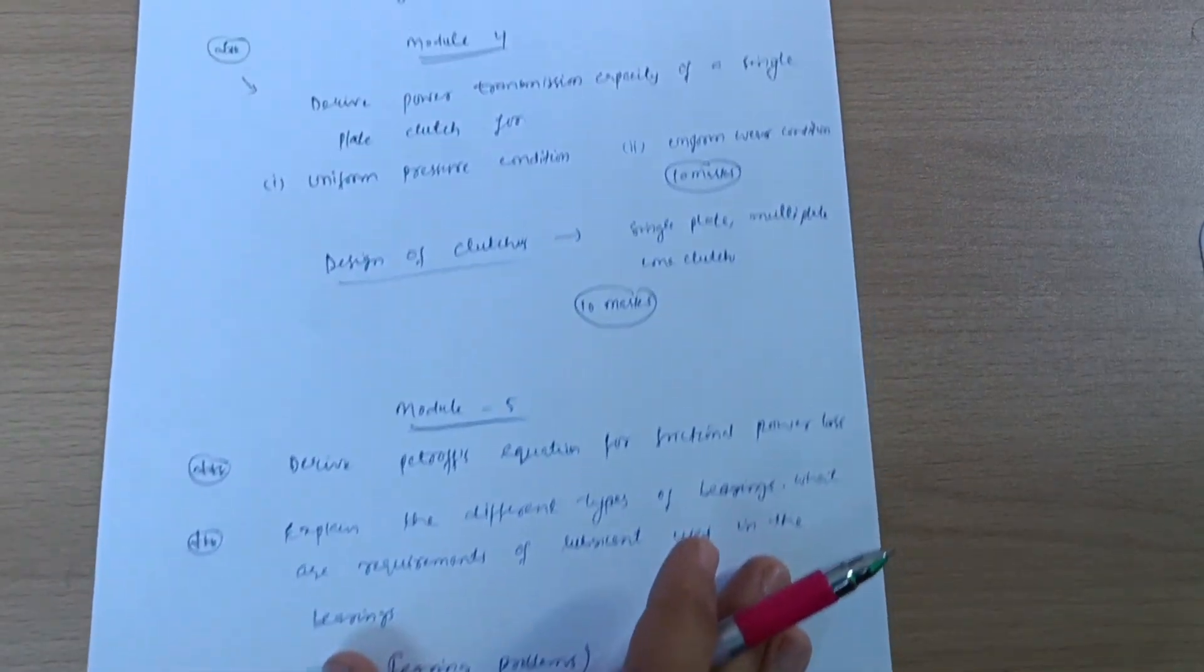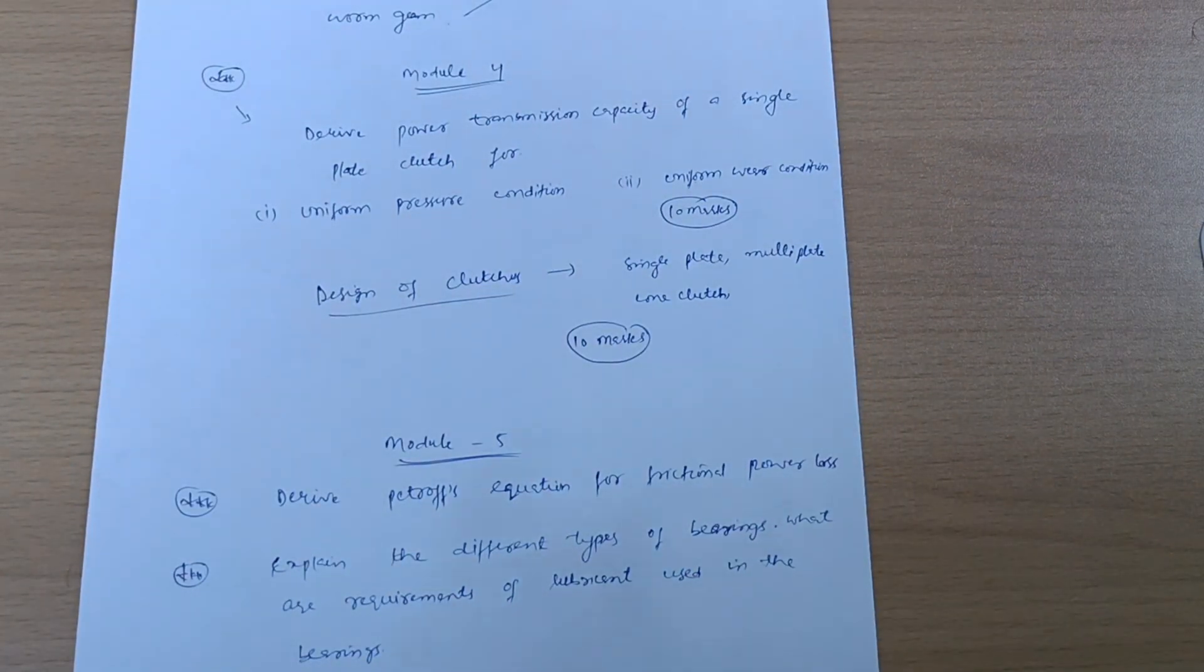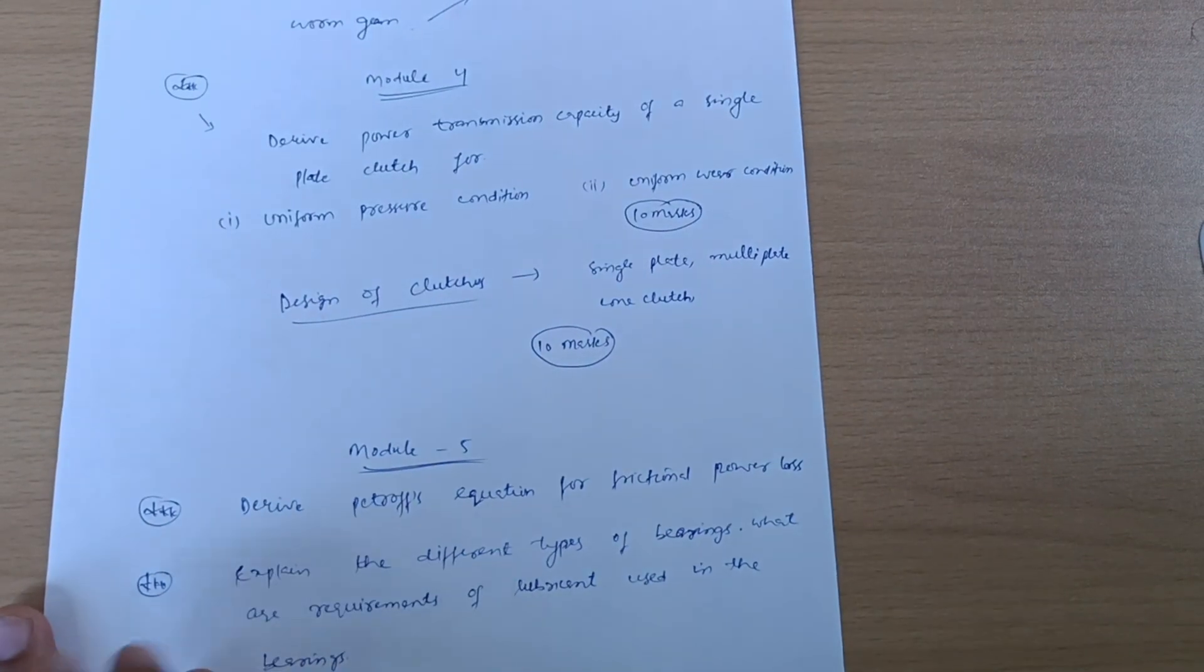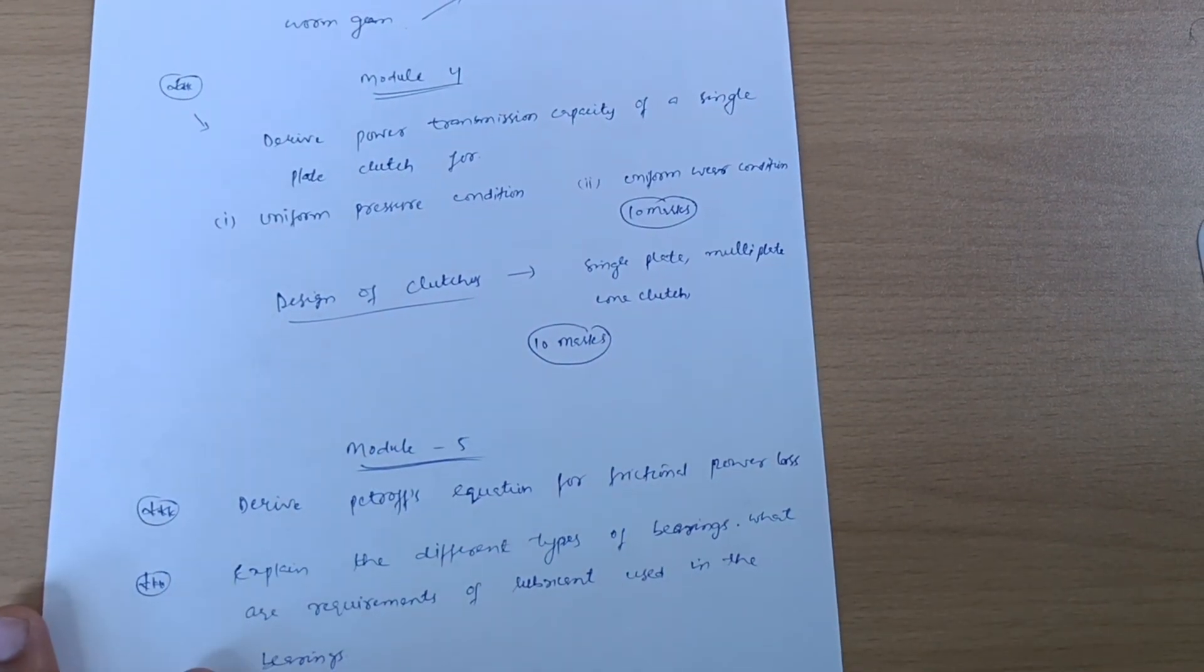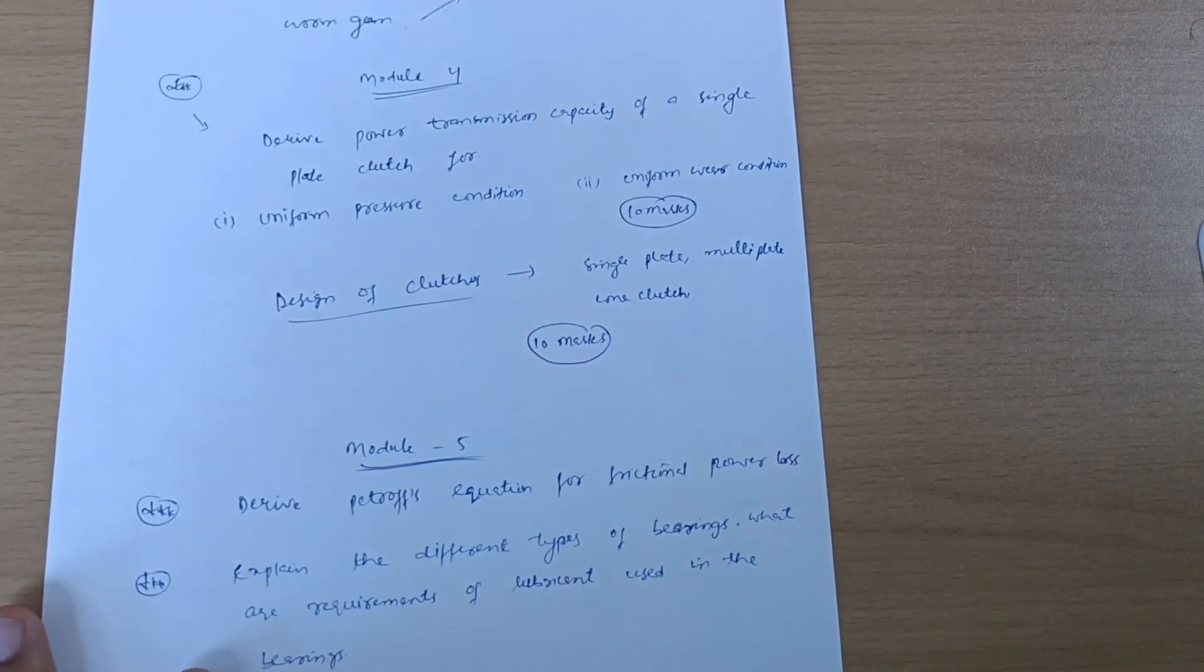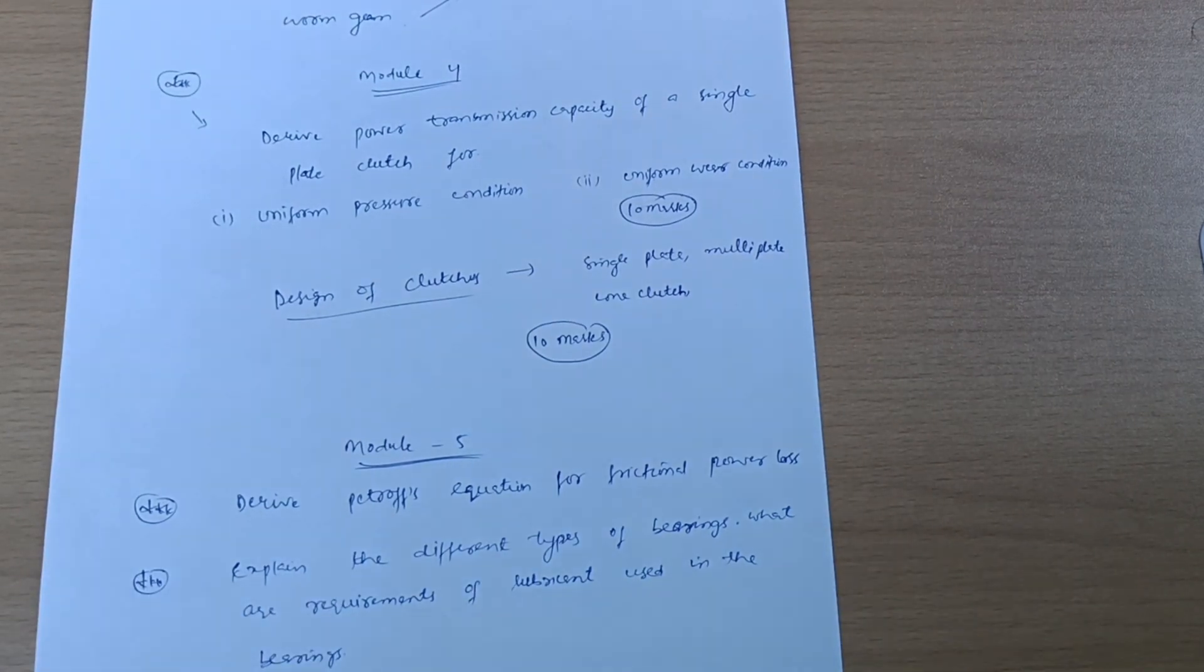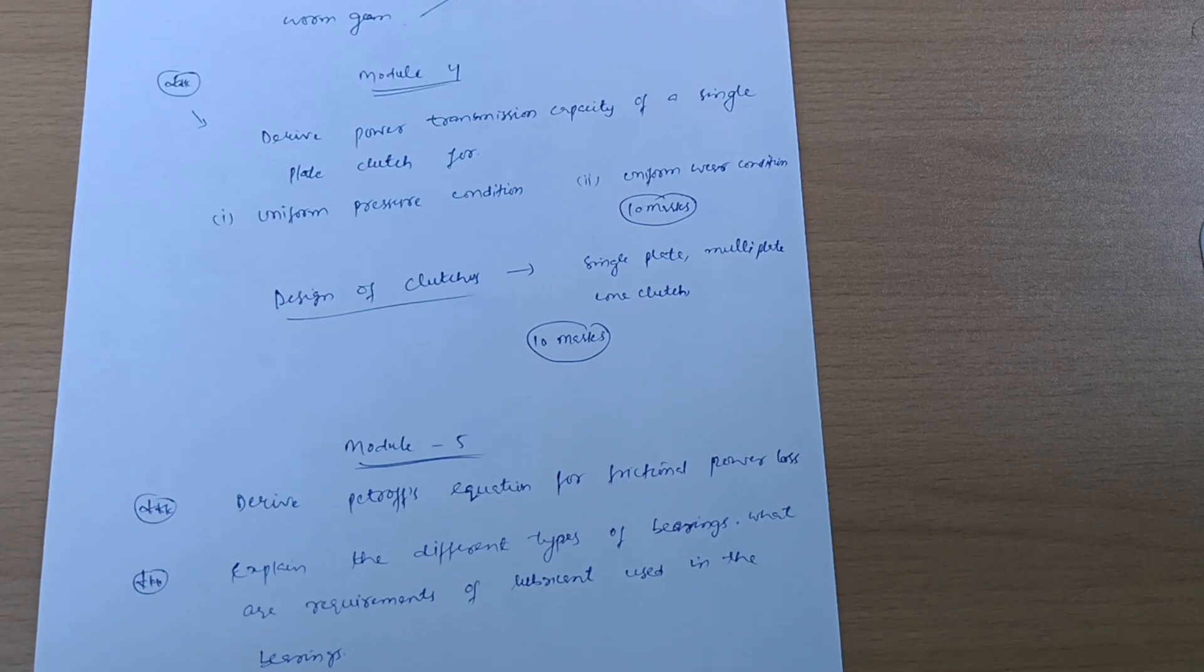Whatever I have mentioned in this video, try to cover the problems first from Module 2 and Module 3, that is gears: spur gear, helical gear, or you should go through bevel gear or worm gear. So that you can at least get out of 40, you should get 30 marks from these two modules.